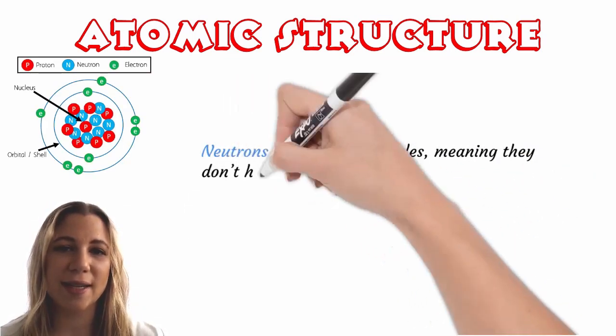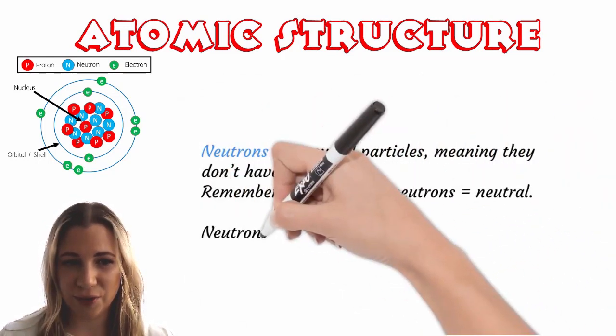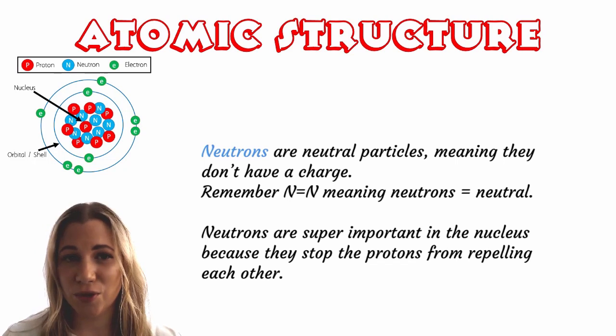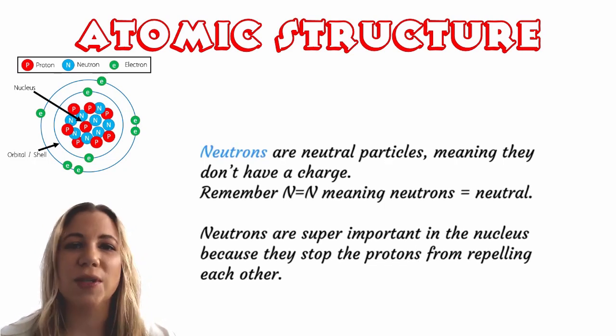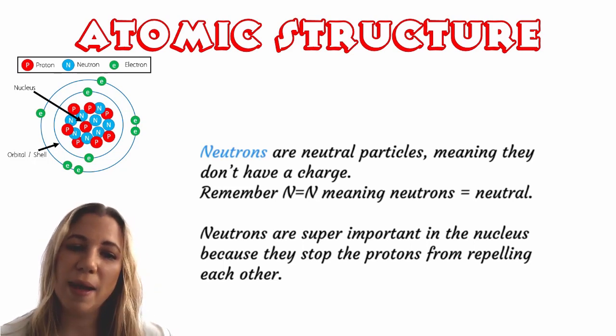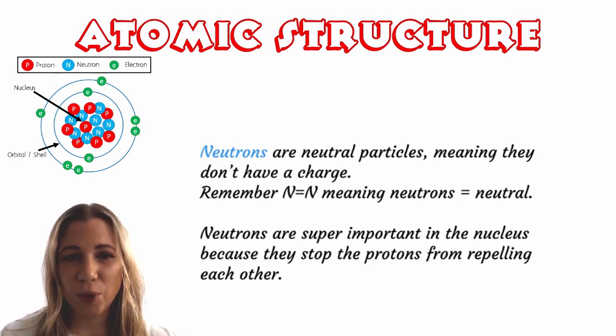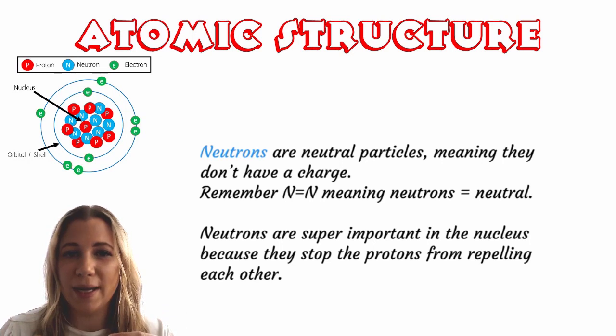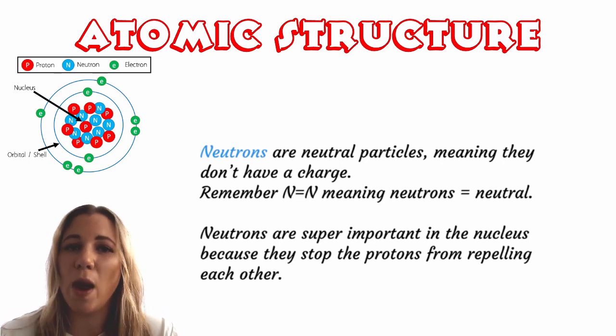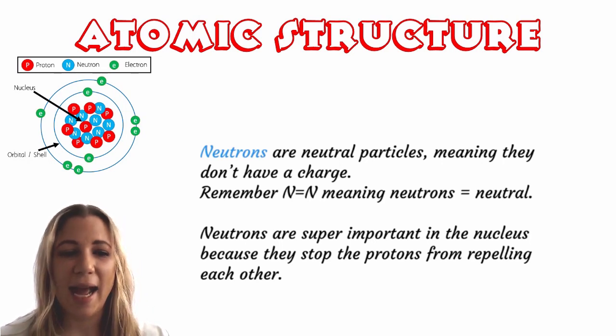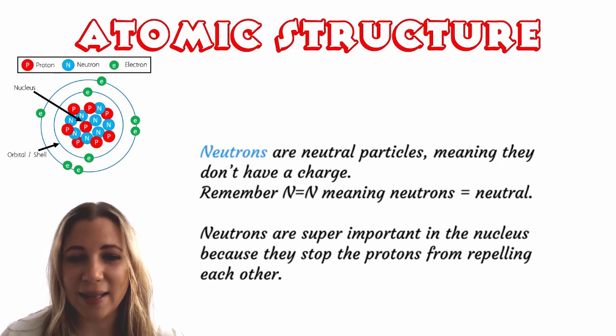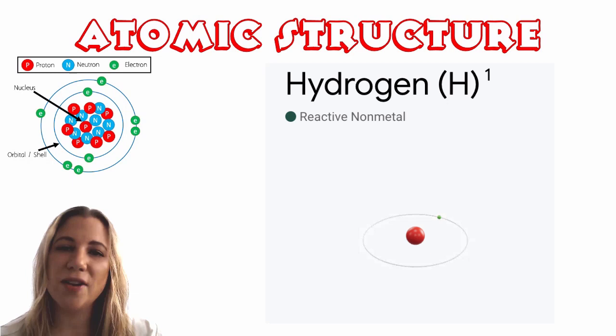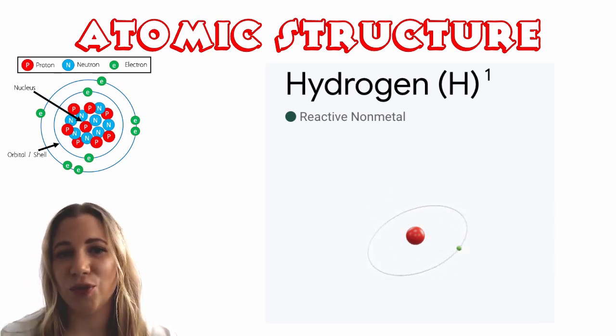The other type of subatomic particle that makes up the nucleus is called the neutron. Neutrons are neutral particles meaning they don't have any charge. They're not positive or negative. I remember that N equals N, so neutron equals neutral. The mass of a neutron is about the same as a proton and so we also just say that it is one atomic mass unit. Neutrons are super important in the nucleus because they actually stop the protons from repelling each other. Since protons are all positive and we know that like charges repel, a nucleus of only protons would not exist. It wouldn't be able to hold together because the protons want to repel each other and move away from each other. Having the neutrons in the nucleus allows the protons to stay huddled together in the nucleus without repelling as they're broken up by the neutrons. The only atom that doesn't have neutrons in the nucleus is hydrogen and this is because hydrogen is only made up of one proton and therefore it doesn't need the neutrons to separate the protons.